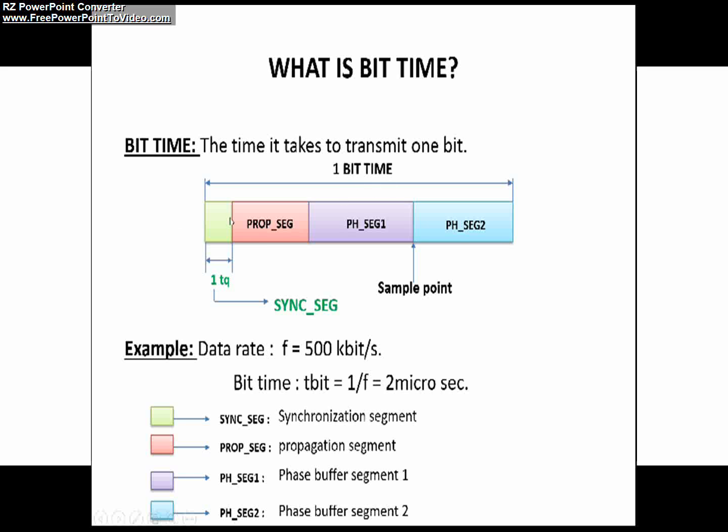You can see here how one bit time is divided into four different segments in CAN protocol: sync segment, propagation segment, phase buffer segment one, and phase buffer segment two. This is the sample point—we'll understand this in upcoming videos.